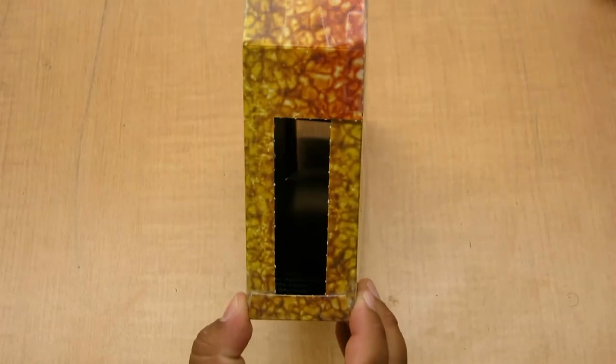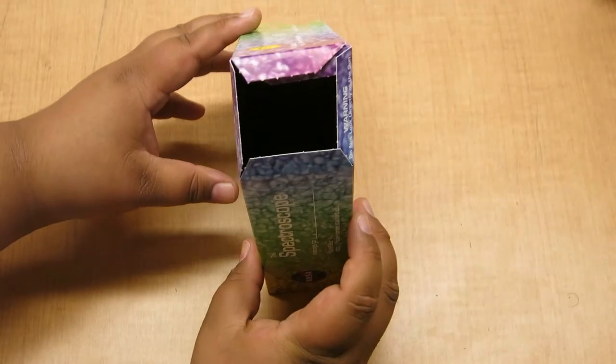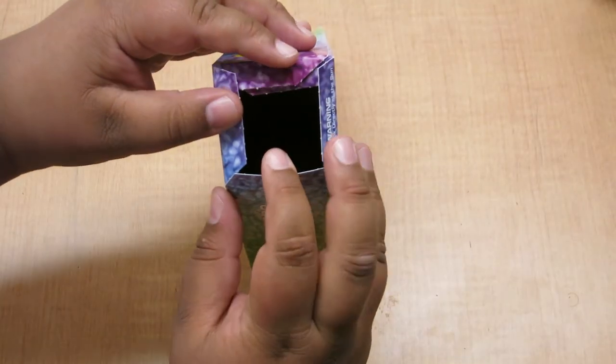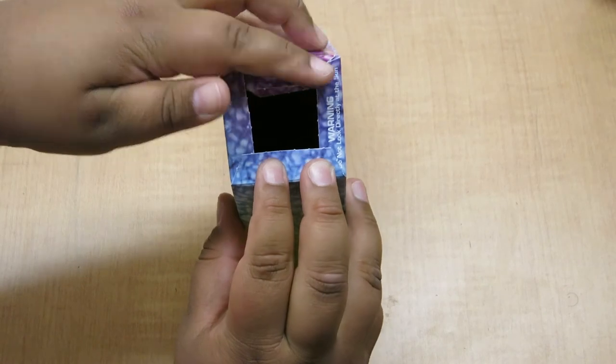Next, we'll turn the spectroscope over and work on the eyepiece. Fold the flaps down on the edges and tape over the corners.